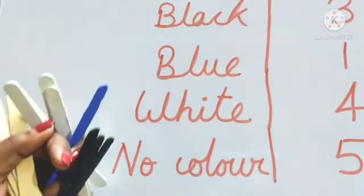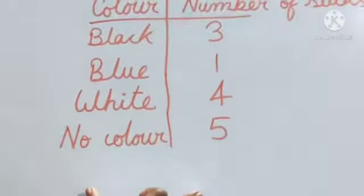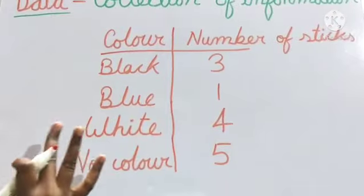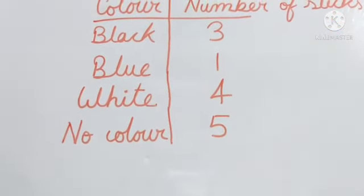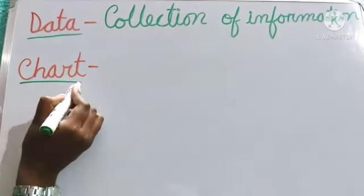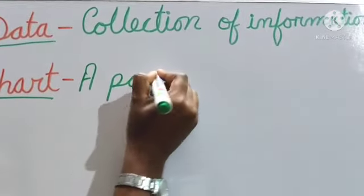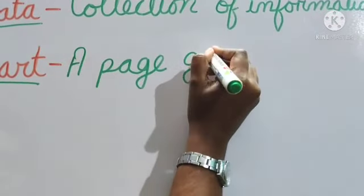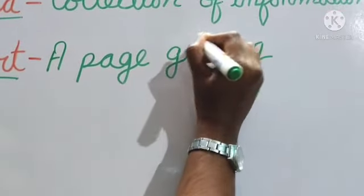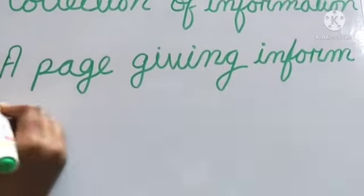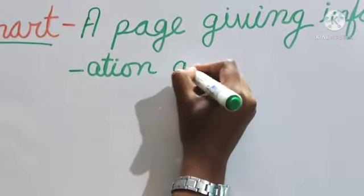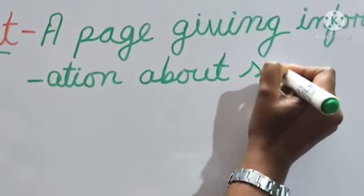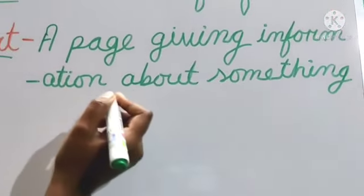We have collected some information and written it in a table. When we write information in a particular table or get information from a table, we call it a chart — from where we get some information clearly. So, what is a chart? A page giving information about something — that we call a chart.